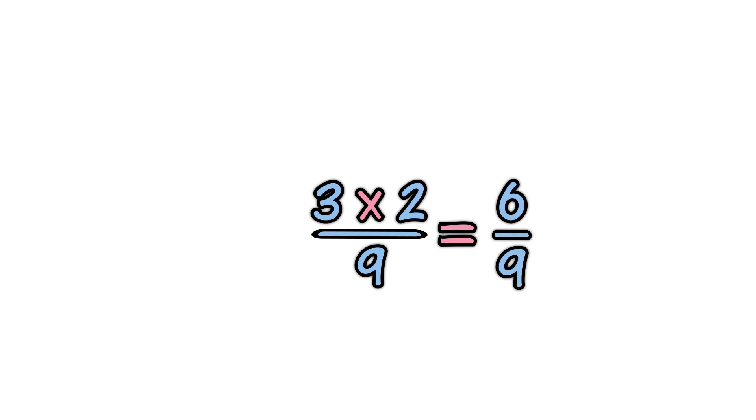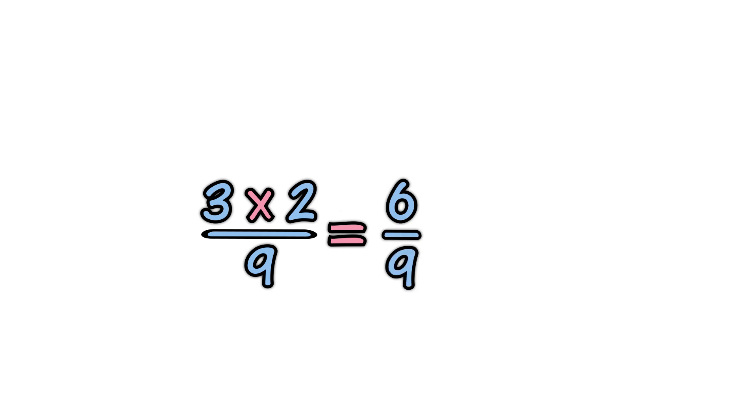Or you can just think of the whole number as being a top number. 3 times 2 ninths. Multiply tops and bottoms. Simplify. 6 ninths is simpler as 2 thirds.